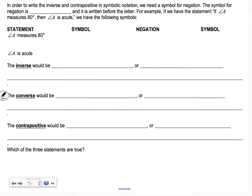In order to write the inverse and contrapositive, we need a symbol for negation. The symbol for negation is this little squiggle, spelled T-I-L-D-E, so I don't know if it's tilde or tilde. Sometimes you might see a little kind of like a division sign used, but usually it's the little squiggle. For example, if we have a statement, if angle A measures 80, then angle A is acute.